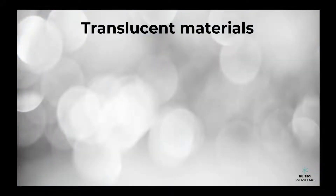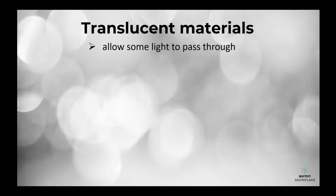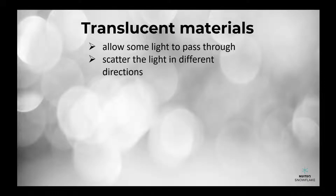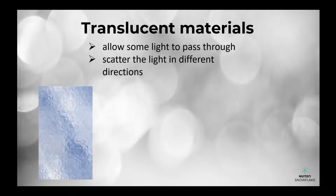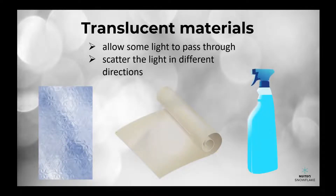Now, let's talk about translucent materials. These materials allow some light to pass through, but they also scatter the light in different directions. This can make them appear cloudy or blurry. Examples of translucent materials include frosted glass, wax paper, and some types of plastic.